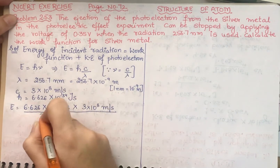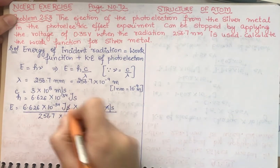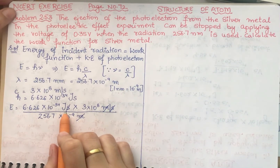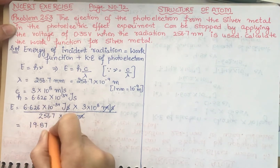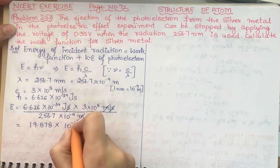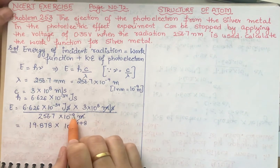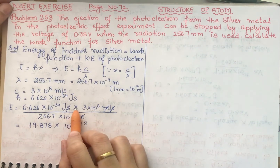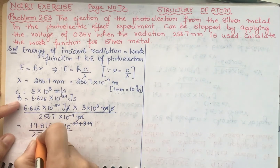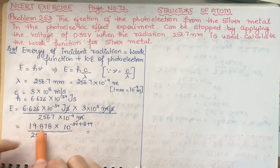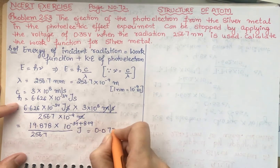In the numerator, 6.626 multiplied by 3 gives 19.878. For the powers: 10⁻³⁴ × 10⁸ = 10⁻²⁶. The denominator has 10⁻⁹, which moves to the numerator as 10⁺⁹, giving 10⁻²⁶⁺⁹ = 10⁻¹⁷. Dividing 19.878 by 256.7 gives 0.07743.